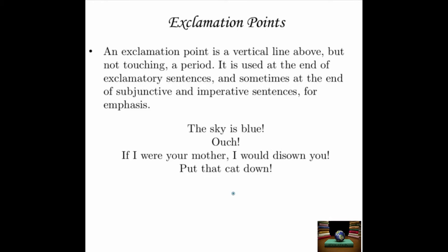An exclamation point is a vertical line above, but not touching, a period. It is used at the end of exclamatory sentences, and sometimes at the end of subjunctive and imperative sentences for emphasis. If you stick an exclamation point on the end, you can always claim it's an exclamatory sentence. Examples: 'The sky is blue!' 'Hooray!' 'Ouch!' 'If I were your mother, I would disown you!' 'Put that cat down!' They all should be said as if you're just a little bit exploding.